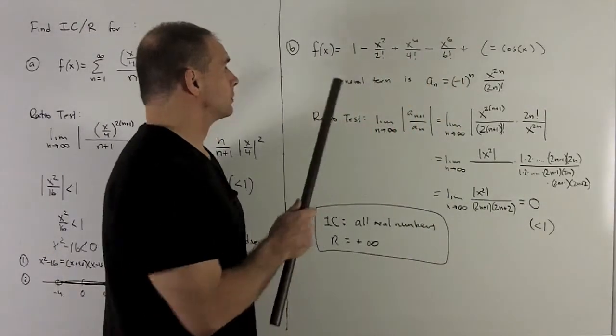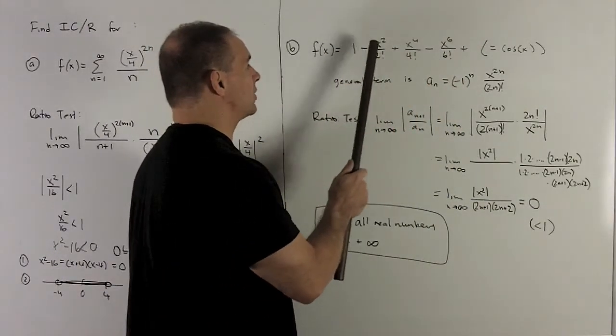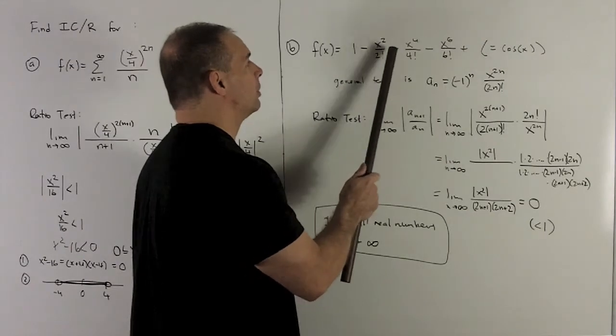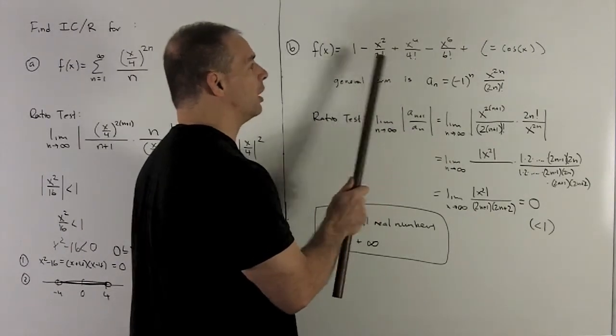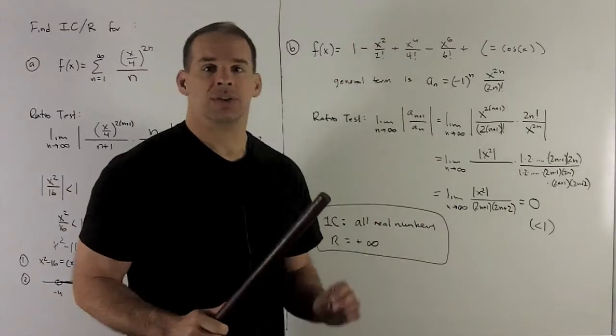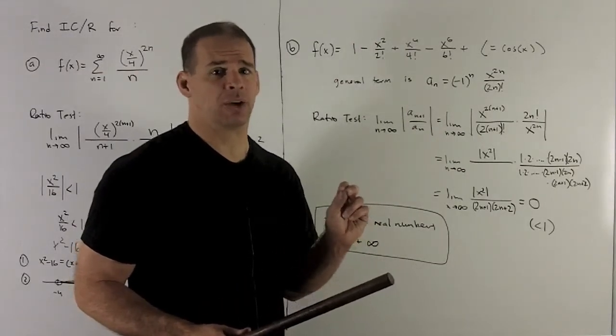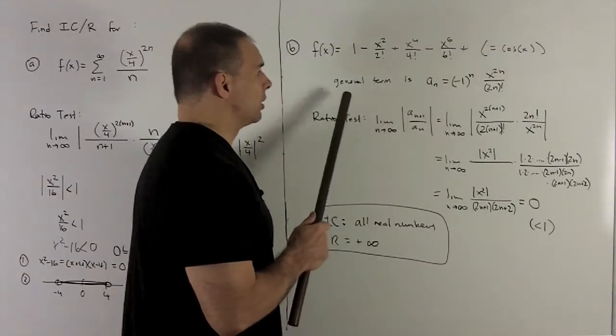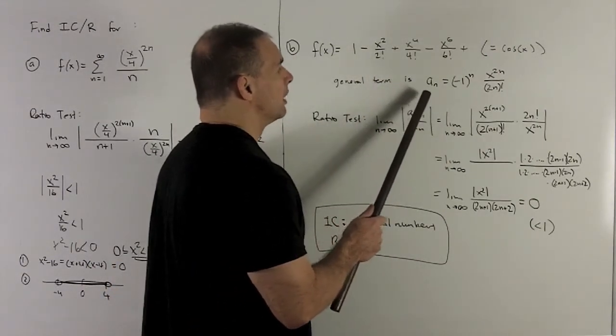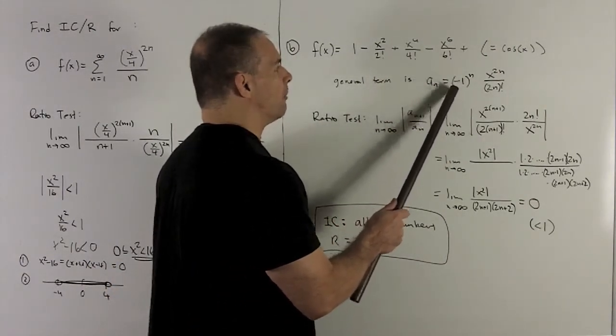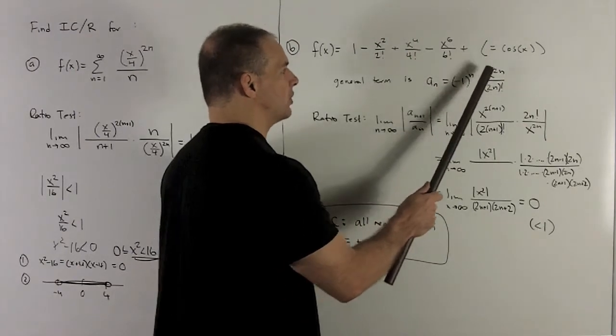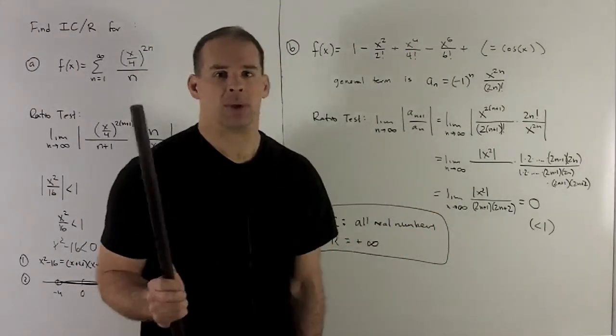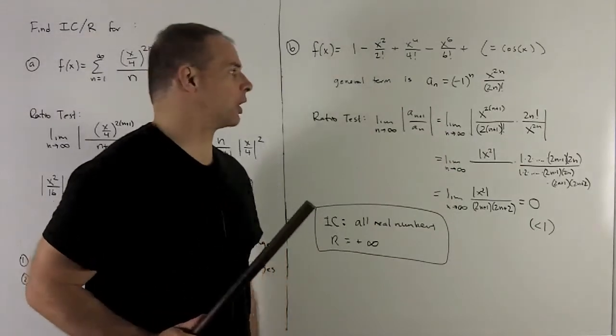So let's try another one. f of x equal to 1 minus x squared over 2 factorial plus x to the 4th over 4 factorial, and so on. So this power series is going to be related to cosine x, and we'll see that in a section or two. The general term here is going to be a sub n equal to minus 1 to the n, x to the 2n over 2n factorial. So we'll have to figure out how to deal with the 2n factorial.